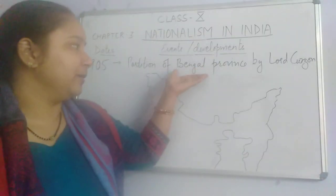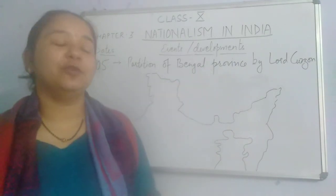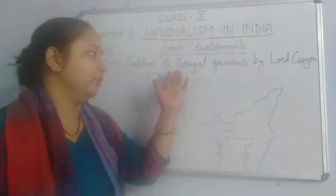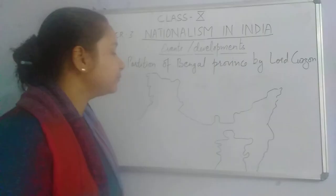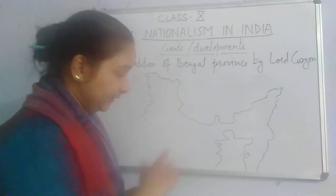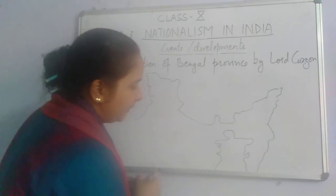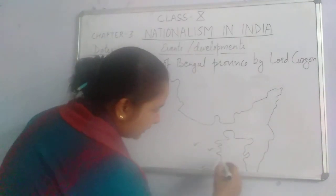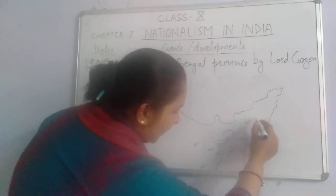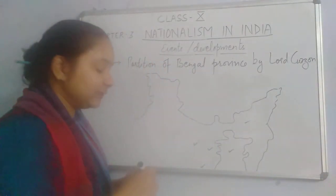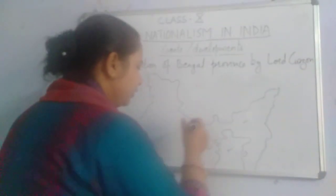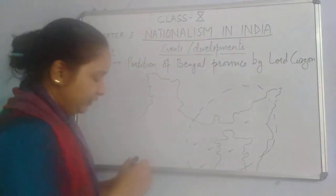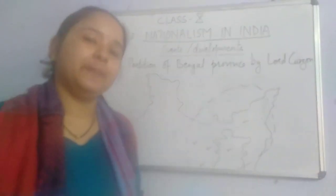When we talk about the Bengal Province, remember we are not talking about West Bengal. Let's understand what the Bengal Province was. It included, at that time, West Bengal, parts of eastern Bihar, Odisha, Bangladesh, Assam, and parts of some northeastern states. So this was a huge area that was included in the Bengal Province of that time.